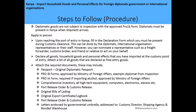The steps to follow in making the application: diplomatic goods are not subject to inspection with the approved Pro 1B form from the Ministry of Foreign Affairs, and diplomats must be present in Kenya when the shipment arrives, so this application can only be done in person at the port of entry. The diplomat, or his agents or staff, must fill in the declaration form and be present during customs clearance. However, you can nominate a representative such as a freight forwarder, customs broker, a friend, or a relative to act on your behalf.